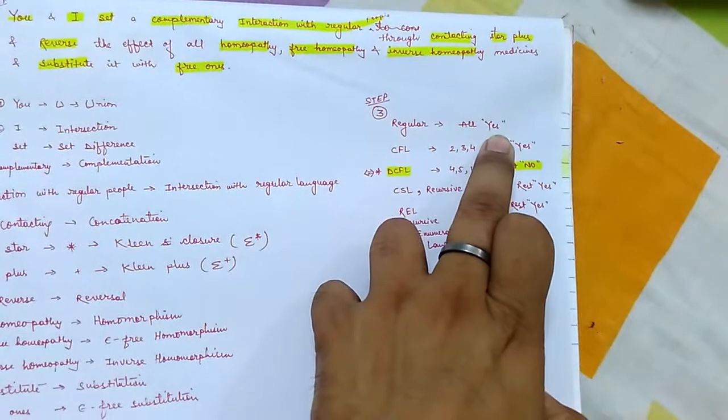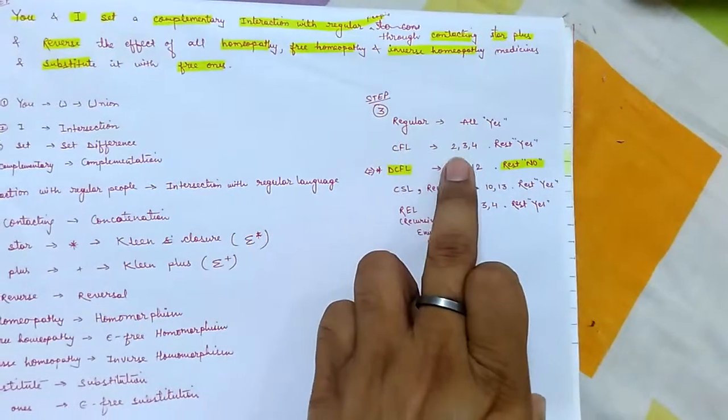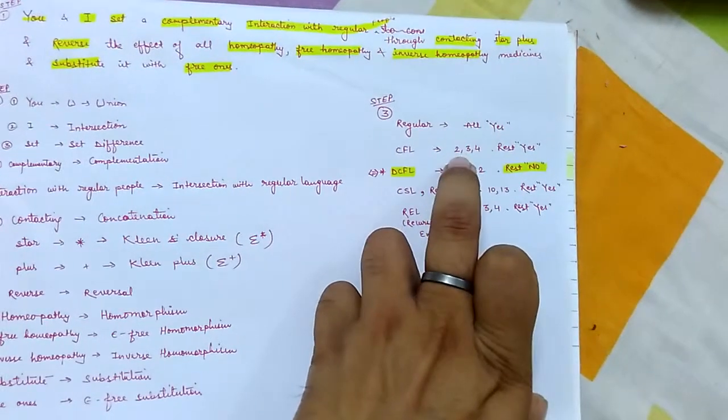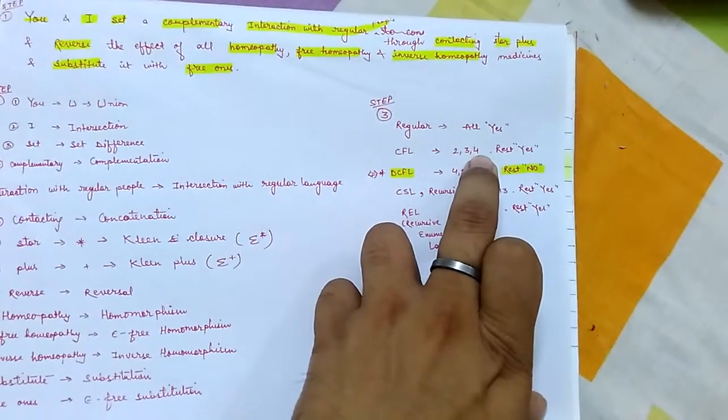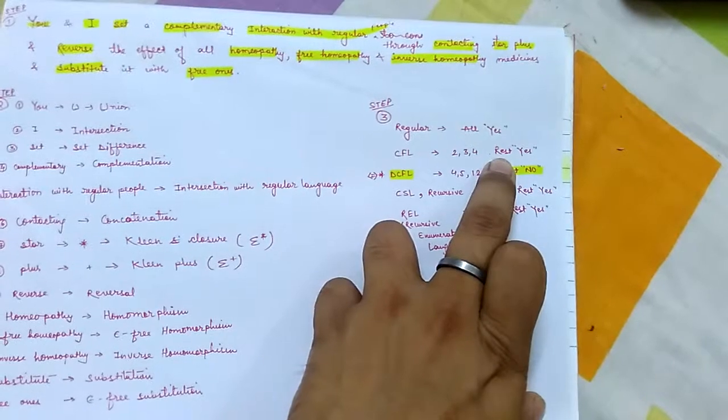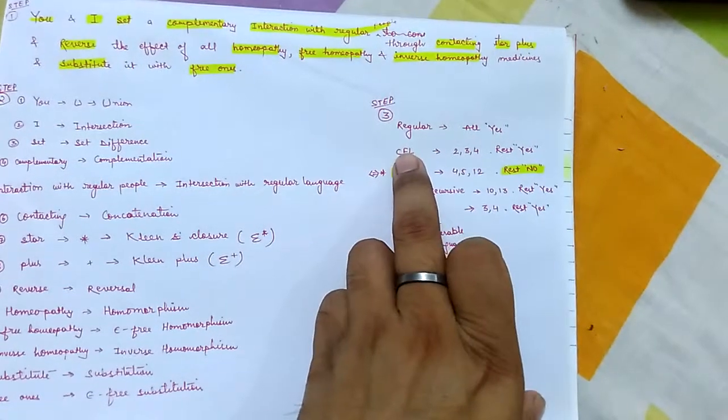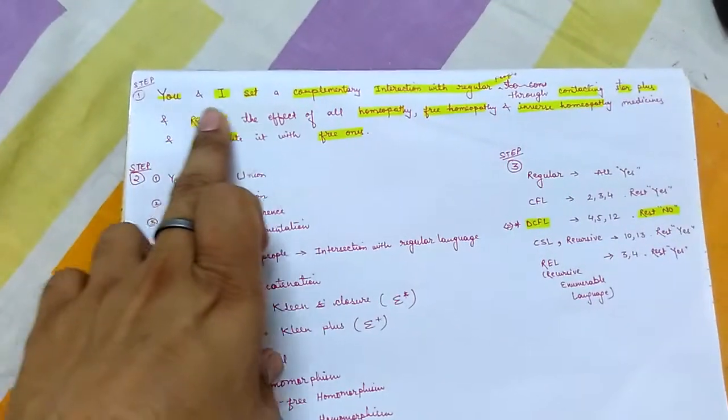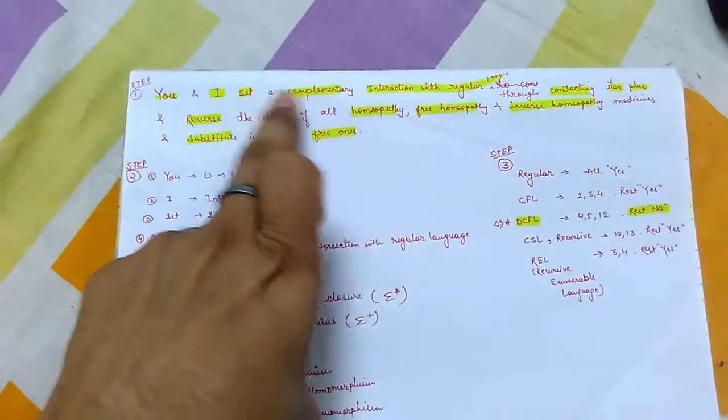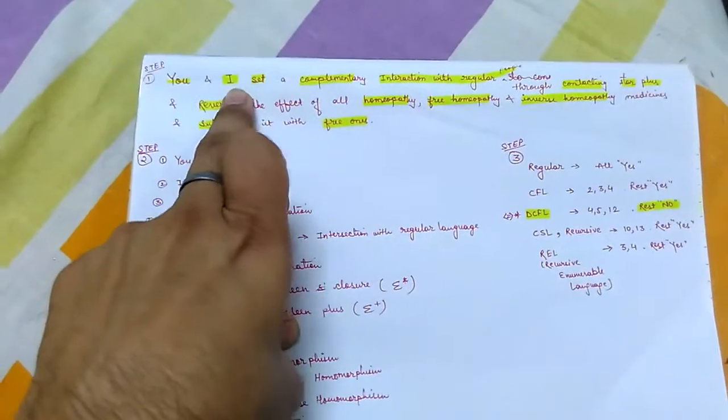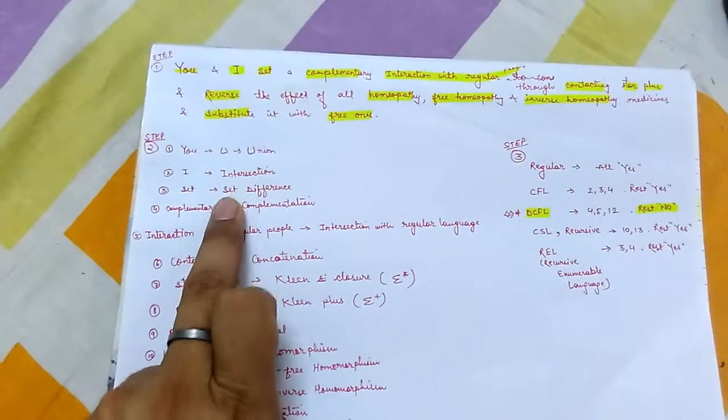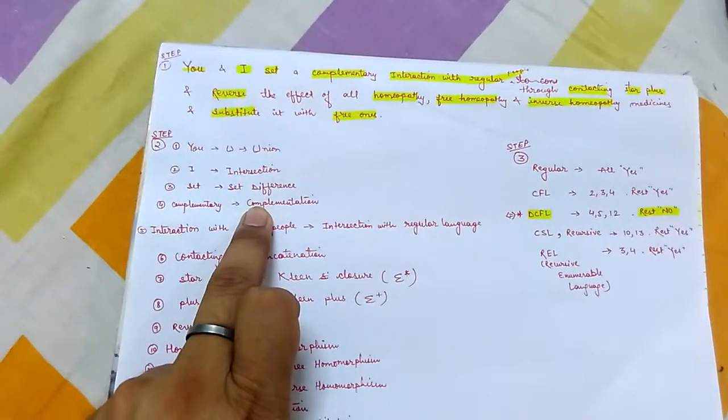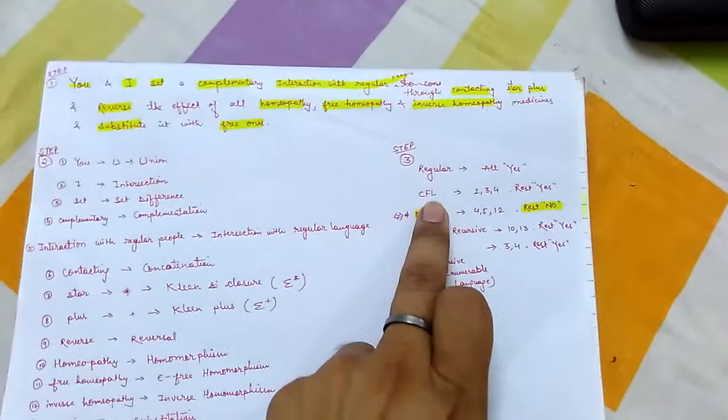CFL: two, three, four rust yes. Two, three, four rust yes means what? For second, third, and fourth property it's not closed. Rest all are closed under CFL. You might be wondering what is two, three, four. We can come here and count: one, two, three, four. So two is intersection, three is set difference, and four is complementation. CFL done.